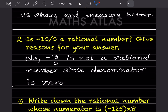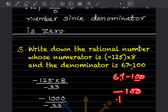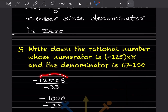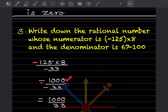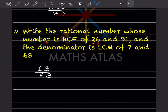Write the rational number whose numerator is -125 × 8 and denominator is 67 - 100. For the denominator: 67 - 100 = -33 (take bigger number's sign). For the numerator: -125 × 8 = -1000. So we have -1000 / -33, and since minus divided by minus is plus, the answer is 1000/33.